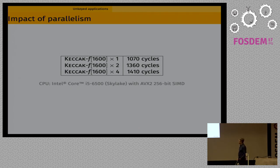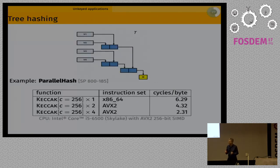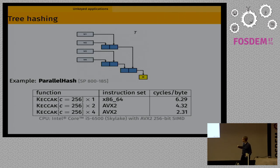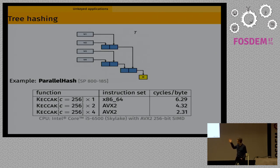To exploit parallelism, we can do tree hashing: taking the input, cutting it into pieces, and evaluating the hash as a tree where each piece is hashed separately, then the digests are concatenated and hashed again to get the final hash. In the latest NIST standard, there is a parallel hash function that exploits this kind of parallelism — the number of cycles per byte on a Skylake processor decreases significantly once the input is big enough, going down to 2.3 cycles per byte.